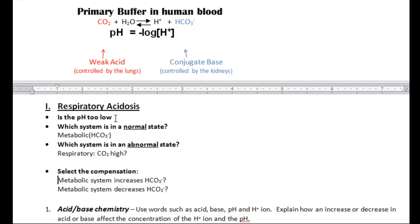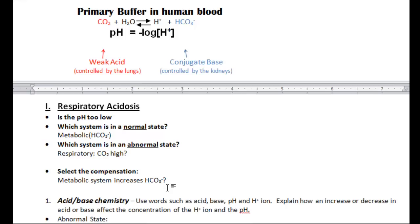Now, the pH is already too low. If we decrease the base, we learned before that you'll set up an acidic condition. We're already too acidic, so we should not decrease the base. We need to increase the base to offset the increase in the acid. So what we've just completed is the summary for respiratory acidosis.